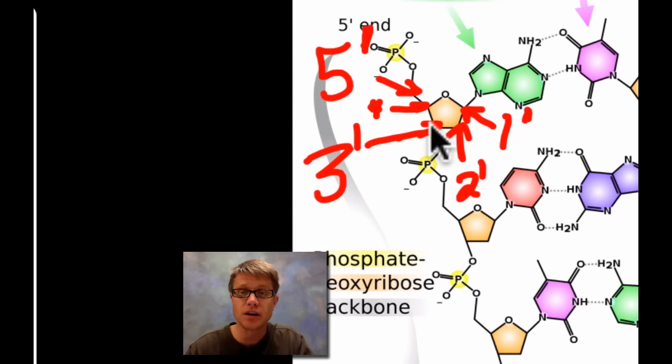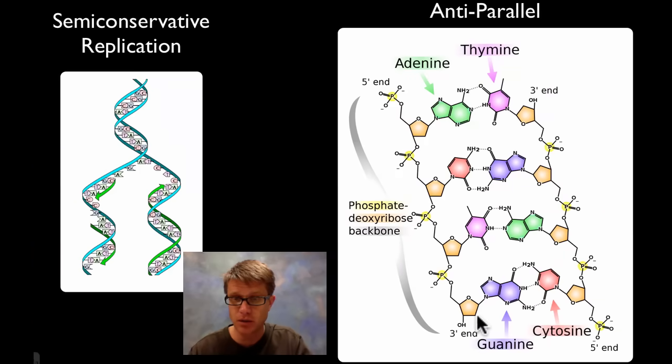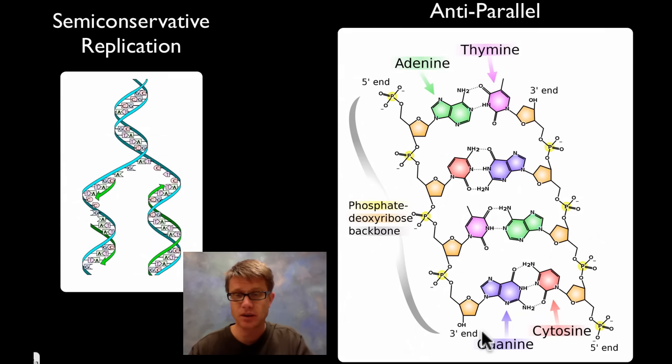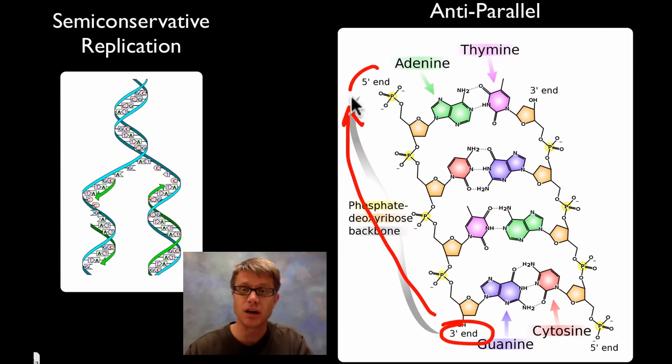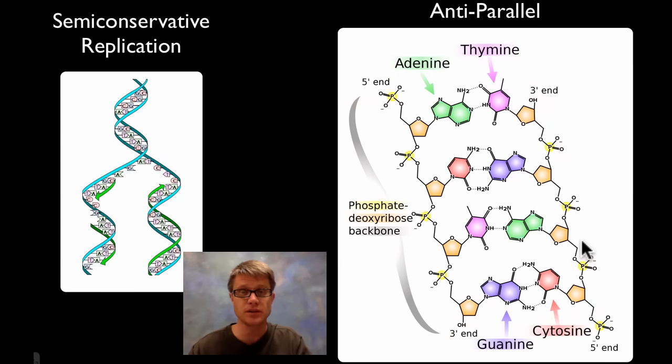And so basically if you look here, that whole thing is going to run from the, let's look way down here, 1, 2, 3 prime end. So that's going to run from the 1, 2, 3 prime end right here all the way up to the 5 prime end over here. Because here's that 5 prime. If we look on the other side of the DNA you can see it's running the opposite direction from the 3 prime to the 5 prime. And that's going to be important when we look at DNA and how it copies itself.